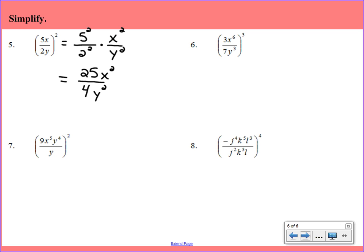So let's look ahead to number 6. Very similar problem. We're going to start by giving that 3 to each of the bases. And we'll start with the coefficients. So I've got 3 to the third over 7 to the third. And then I'm going to go ahead to do the variables. Now here we're going to have that power to a power situation again, which means we have to multiply those exponents. So x to the sixth to the third is going to be x to the sixth times 3. And in the denominator, y to the third to the 3 is going to be y to the 3 times 3.